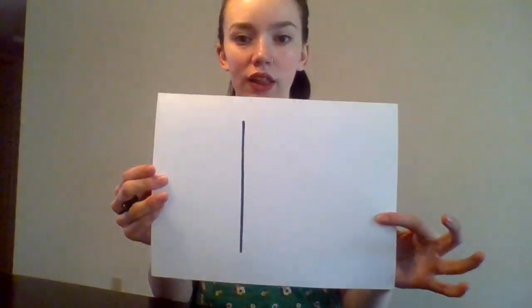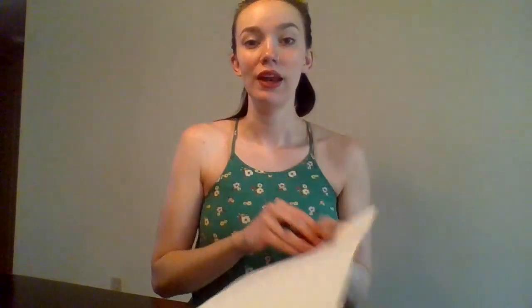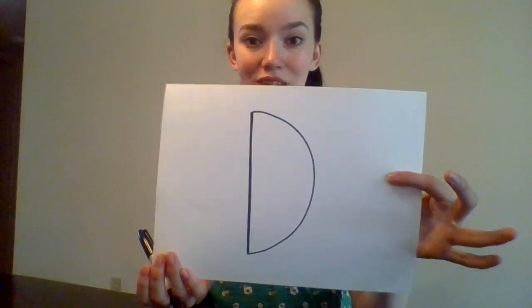So the first thing we're going to do is we are going to write our letter D. Using your drawing utensil, you are going to make one big straight line, just like we did when we made the letter B. One straight line, just like so. So now we're going to do a nice big belly on that D, connecting from the top to the bottom. D.